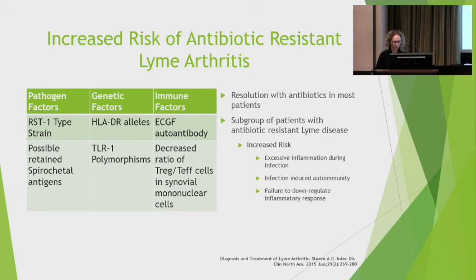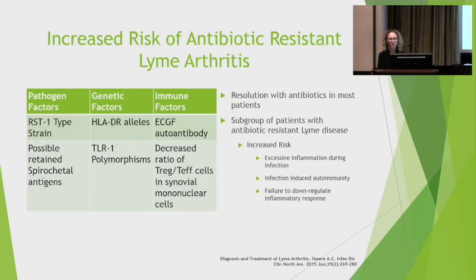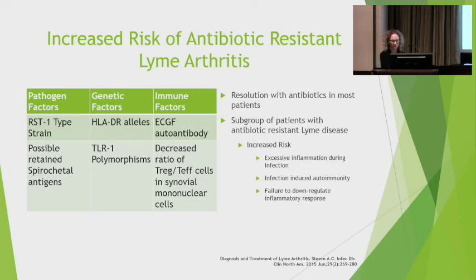The majority of patients show resolution or improvement with antibiotics, but a subgroup remains antibiotic-resistant. Risk factors include excessive inflammation at onset, infection-induced autoimmunity, and failure to down-regulate the inflammatory response. This can be divided into pathogenic factors — such as the strain of Lyme or retained antigens — genetic factors including HLA-DR alleles and toll-like receptor polymorphisms, and immune factors such as a decreased ratio of Tregs to T effector cells in synovial mononuclear cells and endothelial cell growth factor autoantibodies.